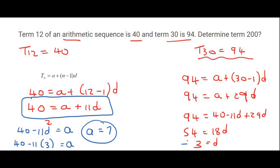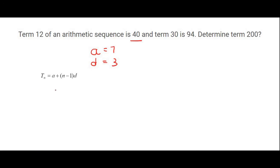Now we have a and we have d, and so we can answer their question, which is to find term 200. We can find term 200 by typing in 7 plus (200 minus 1) and the common difference of 3. You then type that all in and you will get 604.